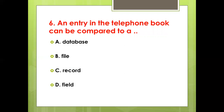Sixth bit: An entry in the telephone book can be compared to a dash — Option A: Database. Option B: File. Option C: Record. Option D: Field. Answer: Option C, Record.